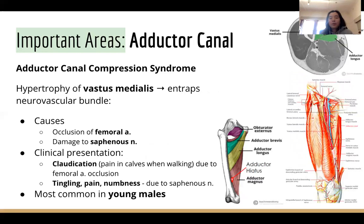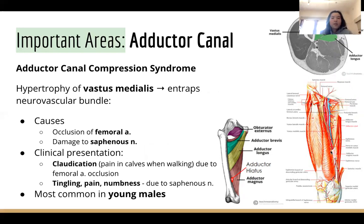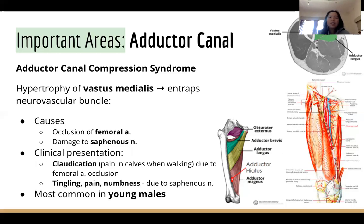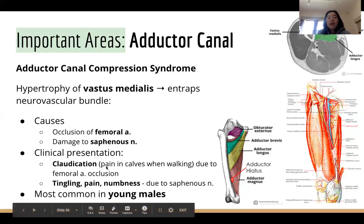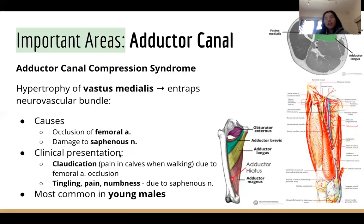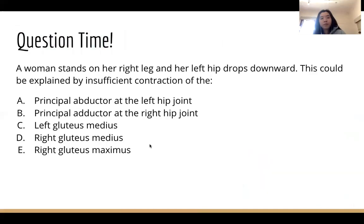The pes anserinus — also called the goose foot — is where three muscle tendons attach to the tibia: sartorius, gracilis, and semitendinosus. A common clinical issue here is bursitis due to the friction and movement of so many tendons in a small area. In the adductor canal, the vastus medialis forms the lateral border. Adductor canal compression syndrome can occur if this muscle hypertrophies, compressing the femoral artery, femoral vein, and saphenous nerve. Reduced femoral artery flow can present with claudication — calf pain on walking — and saphenous nerve compression causes tingling, numbness, and pain in the medial leg.